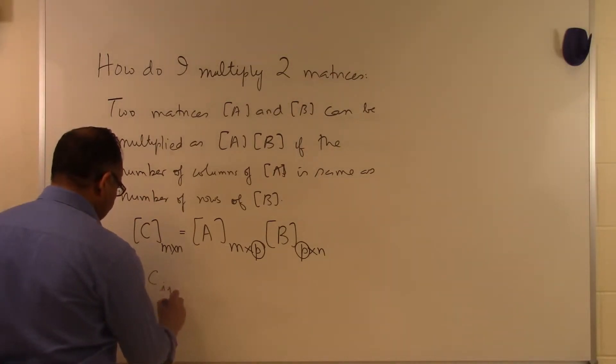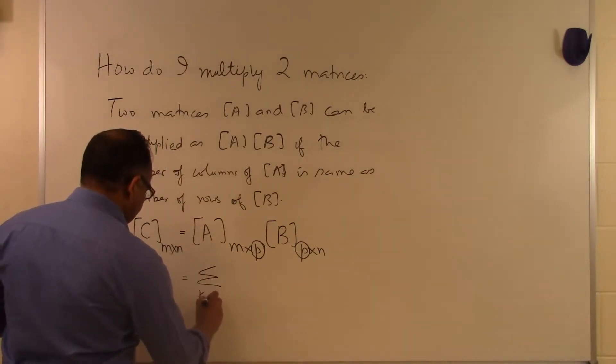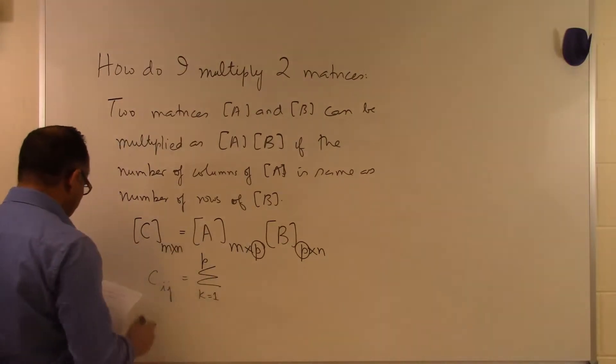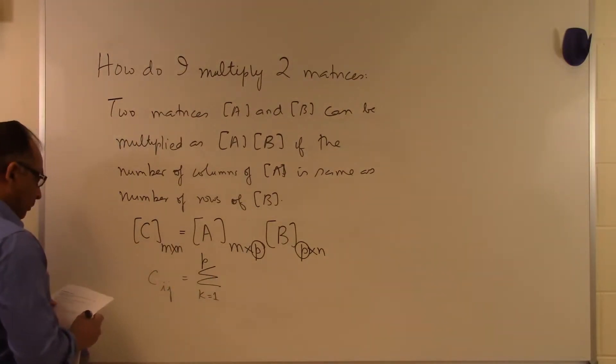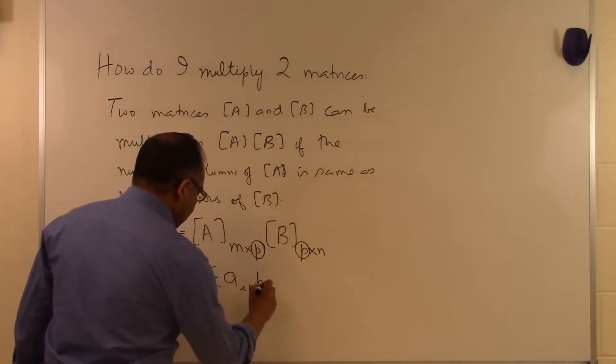The ijth element of C is given by the summation k equals 1 to P, where P is the number of columns of A or the number of rows of B: sum of A_ik times B_kj.